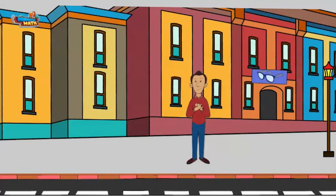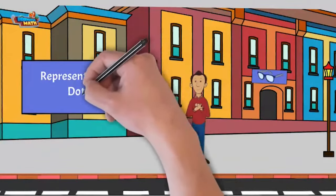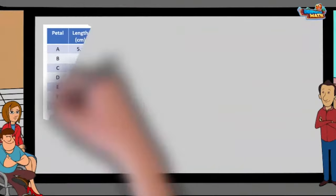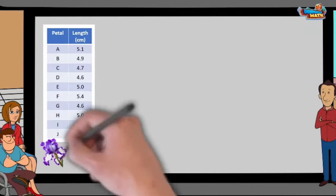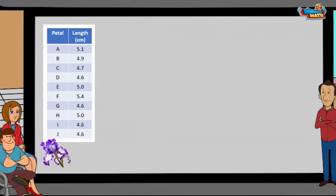We are just back from lunch here at Datas are Us and we are working on representing data on a dot plot. Welcome back recruits, next we are taking a look at the measurements of petals on an iris.